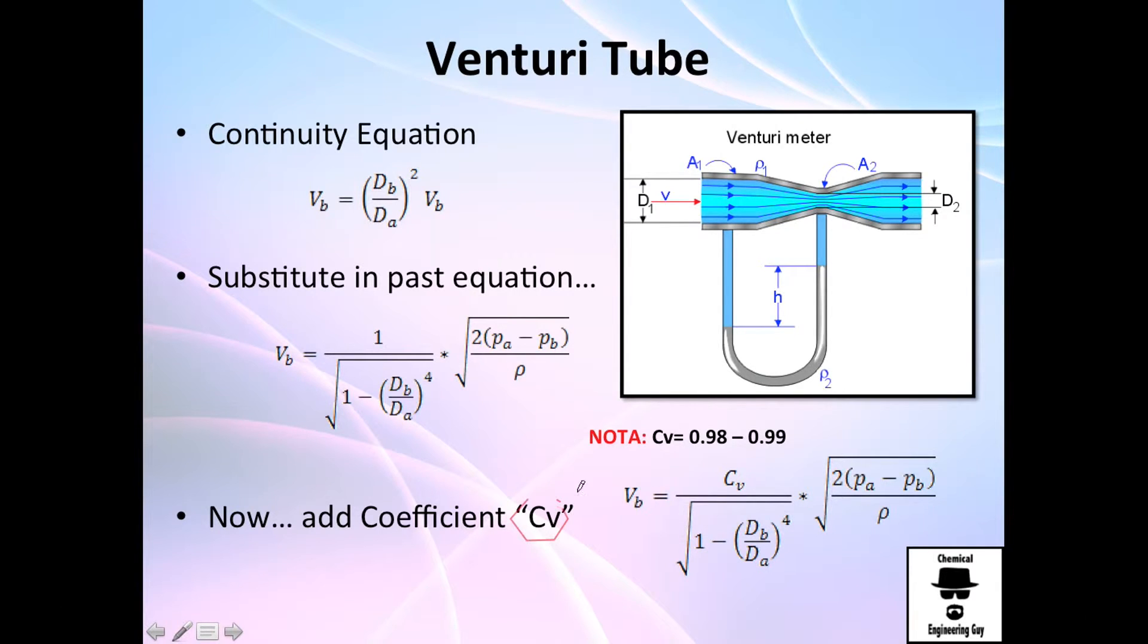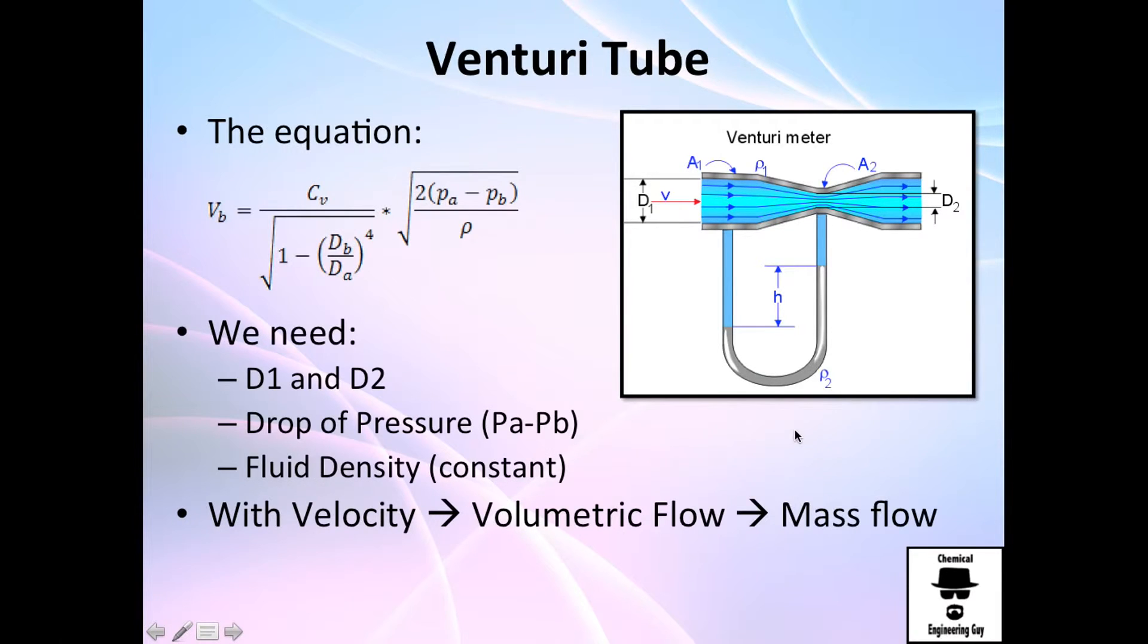Just a little note on the Cv value. It's about 0.98 to 0.99. You can see from this equation right now, you can learn it by heart. I don't recommend it. But you can have it in your formulary. Just be sure that this applies only to this system.